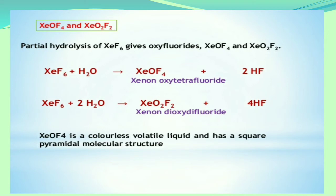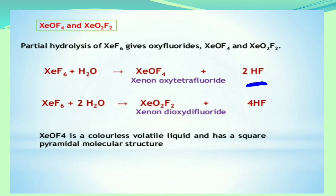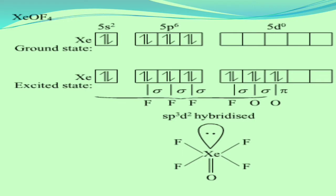The next compounds are xenon oxides and oxyfluorides: XeOF4 and XeO2F2. The partial hydrolysis of XeF6 gives the oxyfluorides. XeF6 plus water gives xenon oxytetrafluoride (XeOF4) plus 2HF. When XeF6 reacts with two water molecules, we get xenon dioxidifluoride (XeO2F2) by the removal of 4HF. XeOF4 is a colorless volatile liquid with a square pyramidal molecular structure.